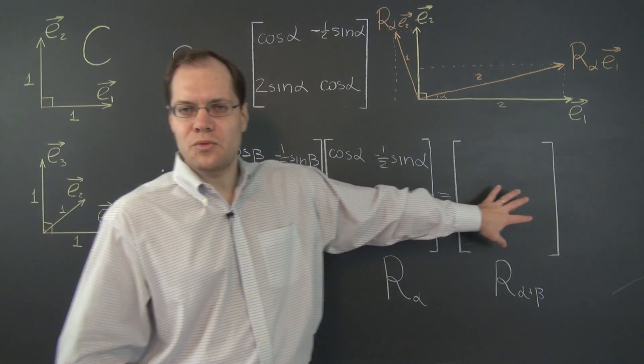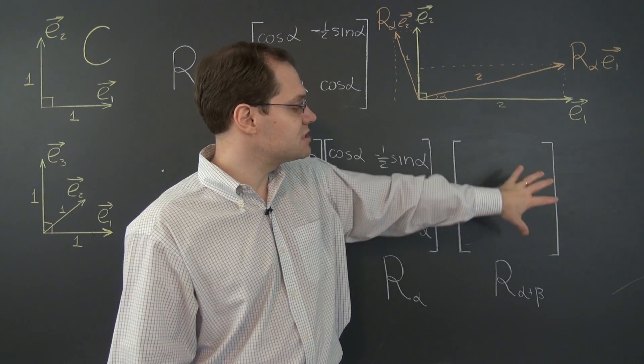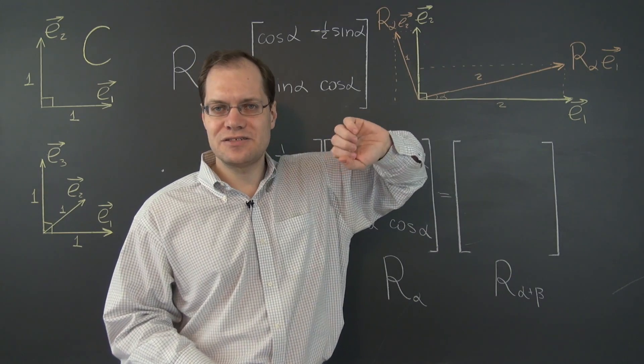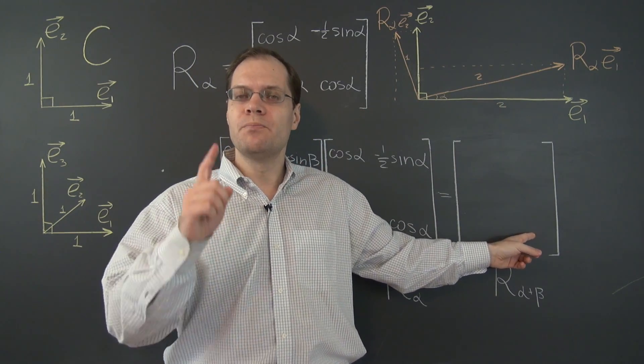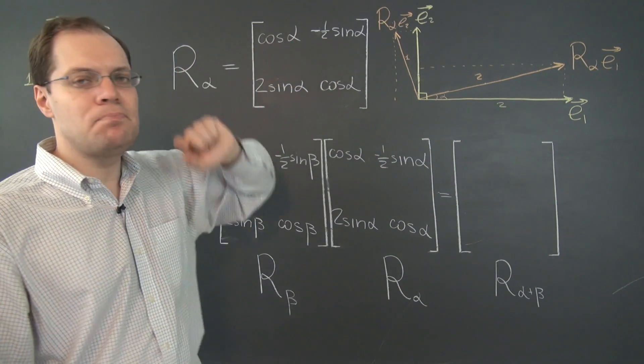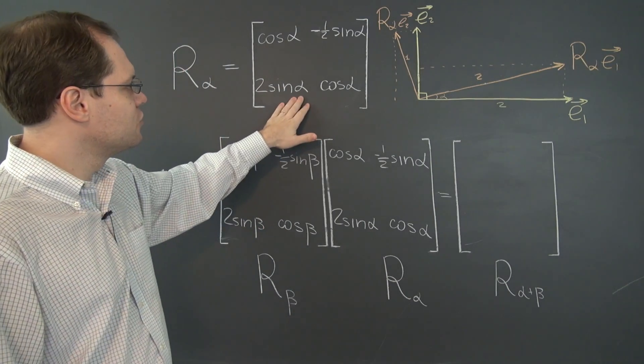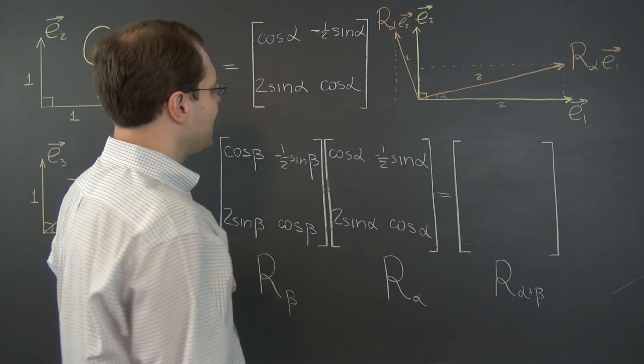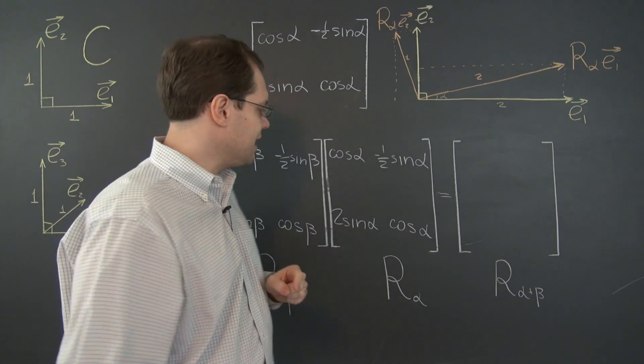So let's think for a moment what we expect here. What we expect here is not the matrix that we had in the previous video where we were working with a Cartesian basis. No. The matrix that we expect is this matrix with alpha plus beta plugged in for alpha. So that's what's so interesting to find out. How all these 1 halves and 2s will work out just right. So let's see how that happens.